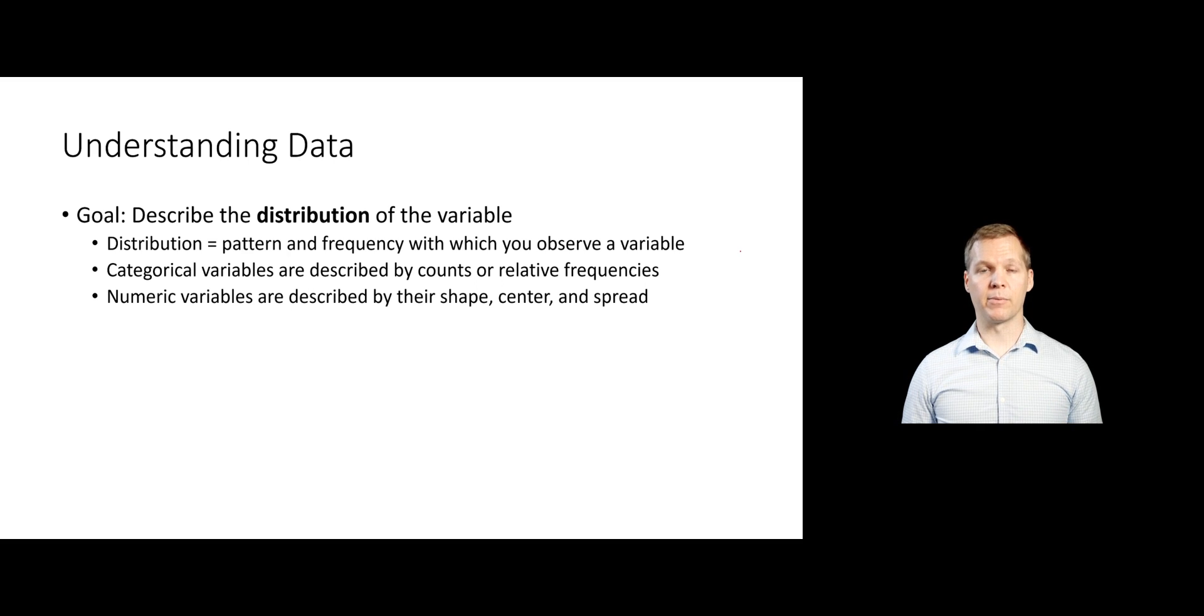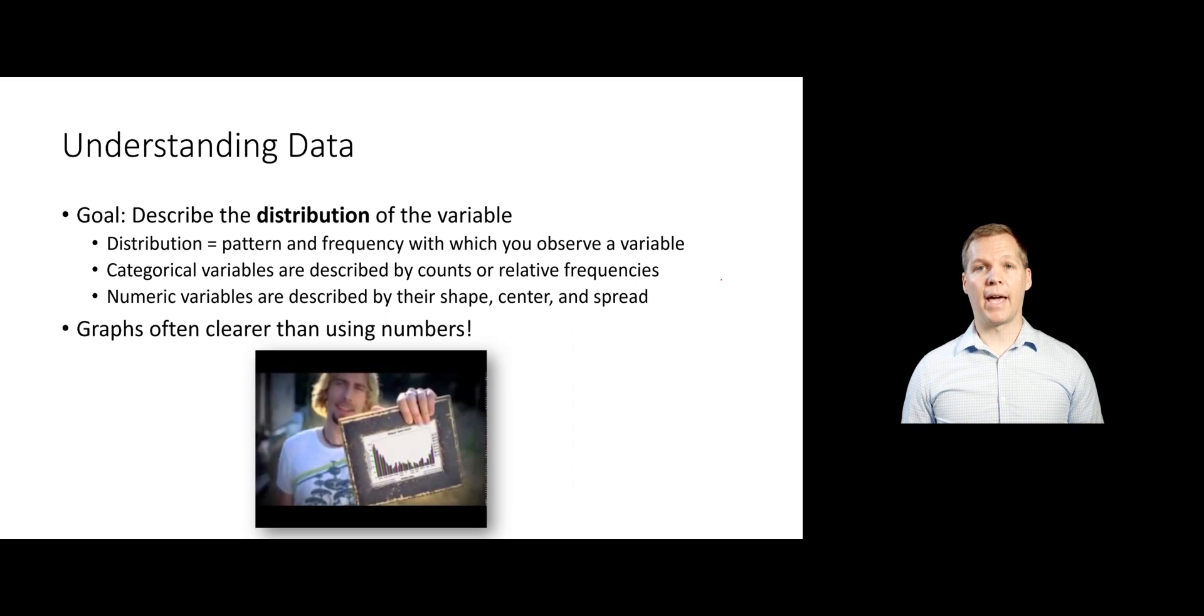We're going to focus on categorical variables in this video. We're going to look at how to take those contingency tables we did in the previous part and look at them in graphical form instead. Graphs are almost always better to use than numbers if you can. People like to look at them. They can understand them much more quickly than they can looking at numbers.